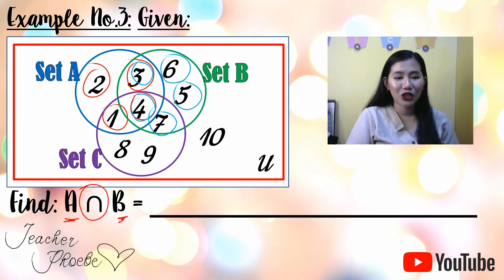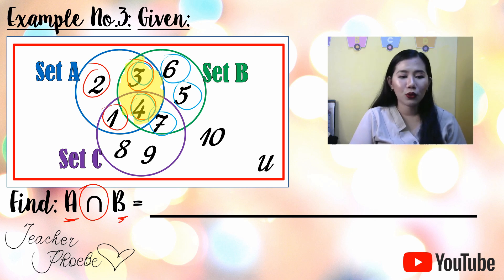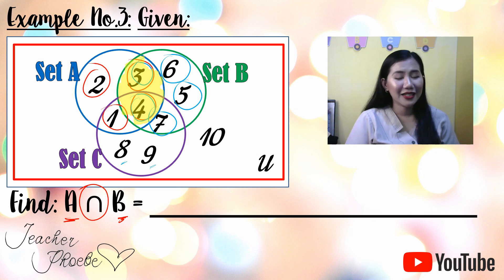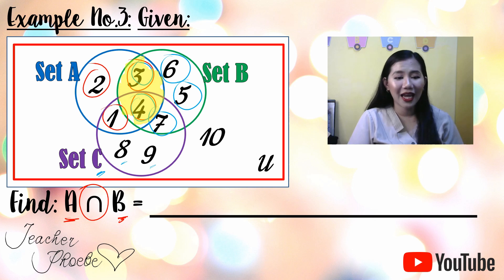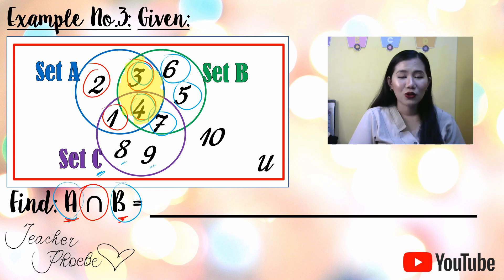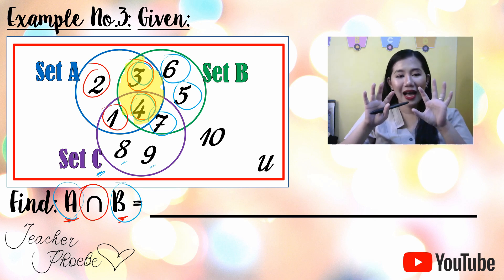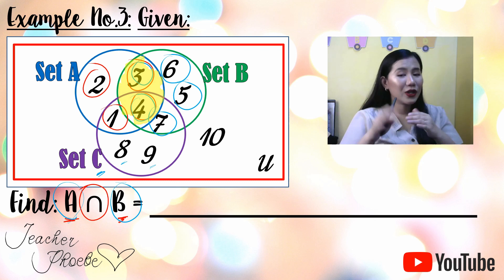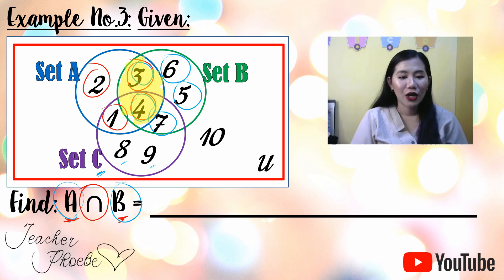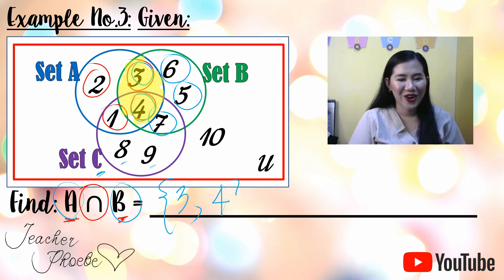The shaded portion shows the intersection of A and B. Regarding 8 and 9 — those belong to Set C, and we are only asked for the intersection of A and B, so we focus only on those two sets. Therefore, the intersection of A and B is {3, 4}.